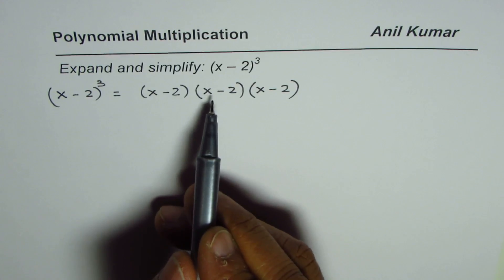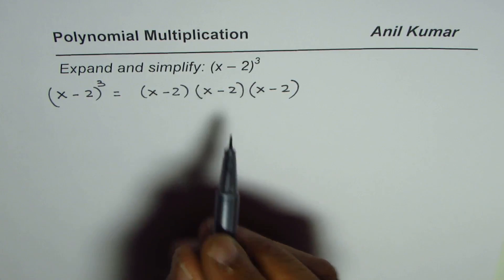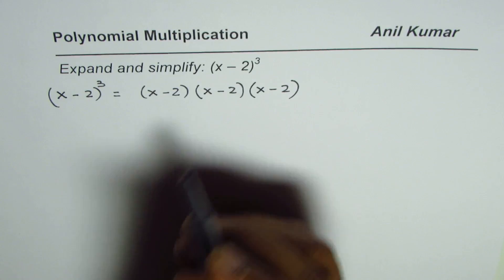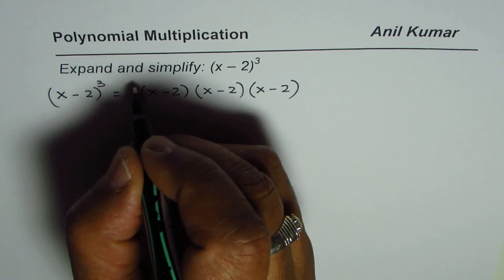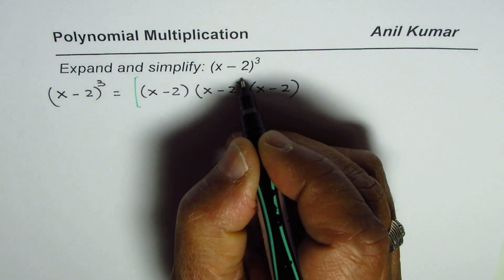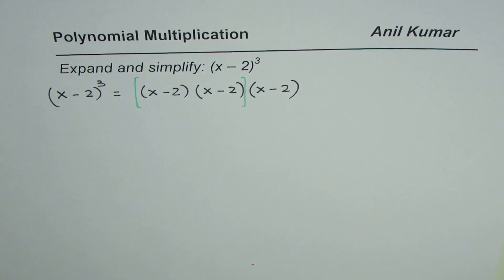Now when you need to multiply three, it is good practice to take two at a time. So in our case, we will take these two first and then later multiply by x minus 2.